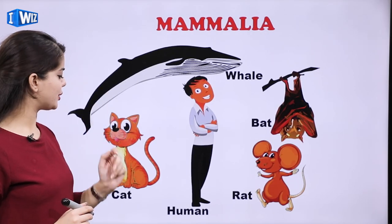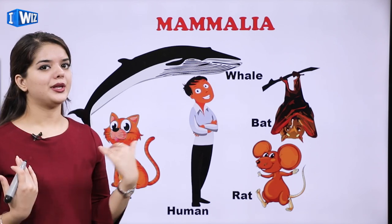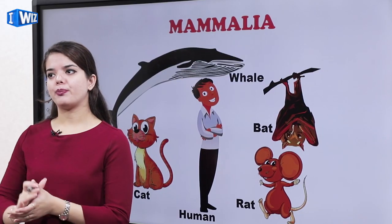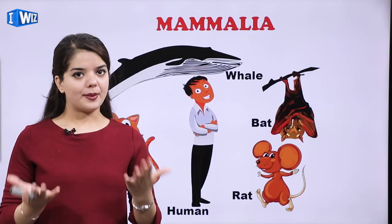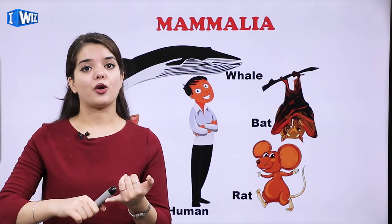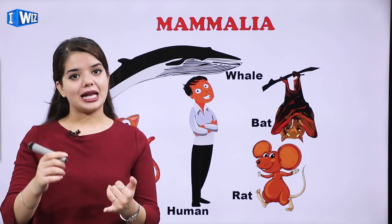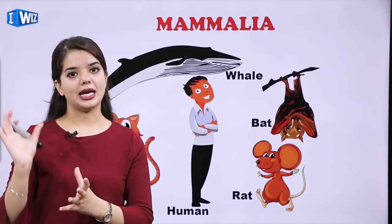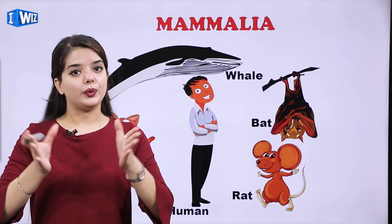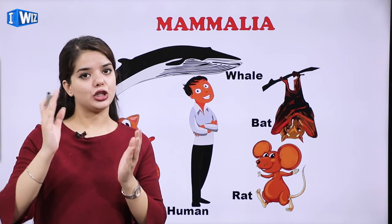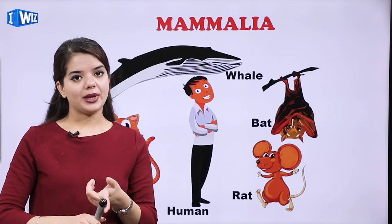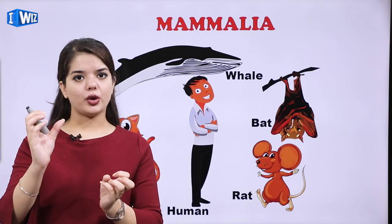Examples of Mammalia are whale, bat, rat, cat, and humans. To summarize this lesson on the Animalia group: we have studied many subgroups, from Porifera all the way to Mammalia, learning the different properties and organisms of each. Key terms to remember: bilaterally symmetrical means dividing gives equal halves; triploblastic means three layers of cells; notochord is the skeletal rod; and coelom is the body cavity that accommodates organs.